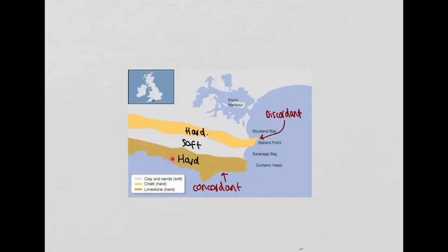we can see that this band of rock here is running parallel to this coastline, so this is an example of a concordant coastline. Whereas if we come round to the opposite side towards the bay area, we can see that our bands of rock are running perpendicular to this area of coastline. This is a discordant coastline.